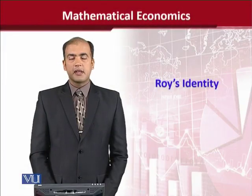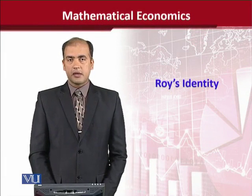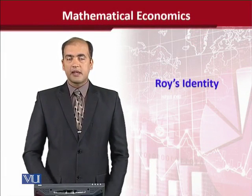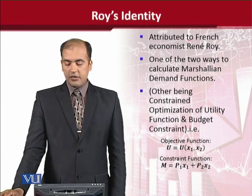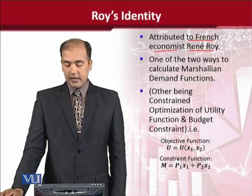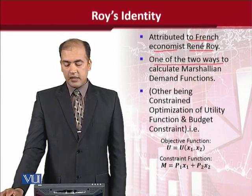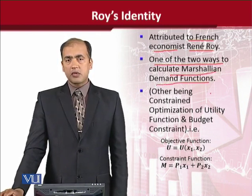Dear students, in this lecture we shall learn about the application of Roy's identity in economics. It is attributed to a French economist whose name was René Roy. And it is basically one of the ways in which we can calculate the Marshallian demand functions — this is the second method.